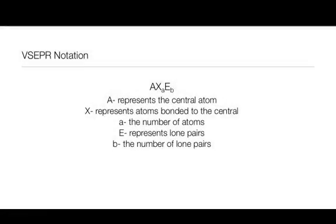In this video we're going to take a look at VSEPR notation. In VSEPR notation we use a three-letter combination to represent the structure that our Lewis structures are representing. It gives us a better idea of how the atoms are arranged and what kind of shape these molecules are going to take. In our VSEPR notation, the A represents the central atom.